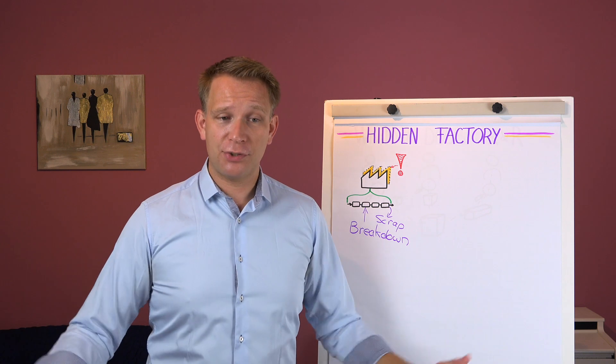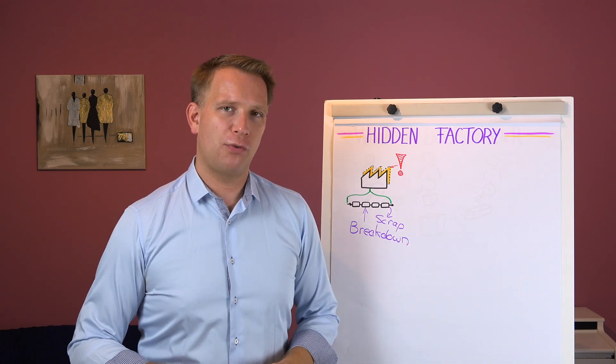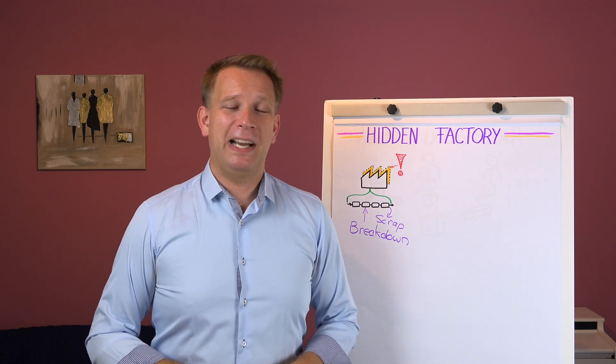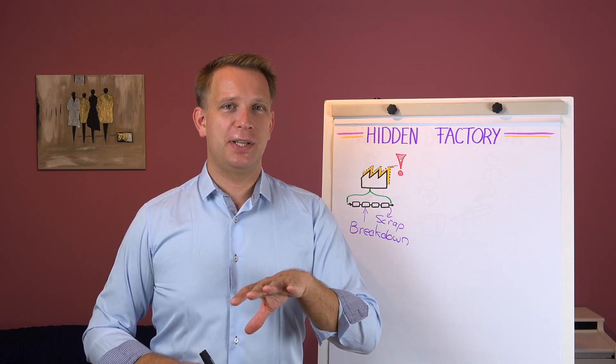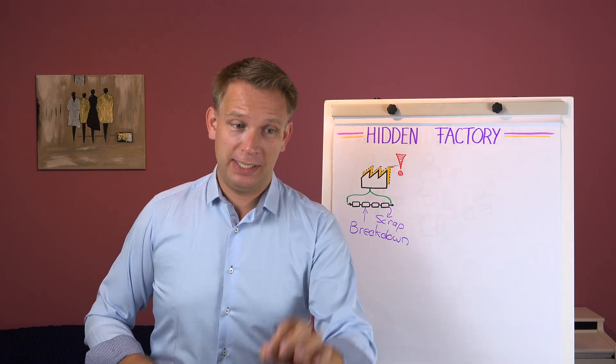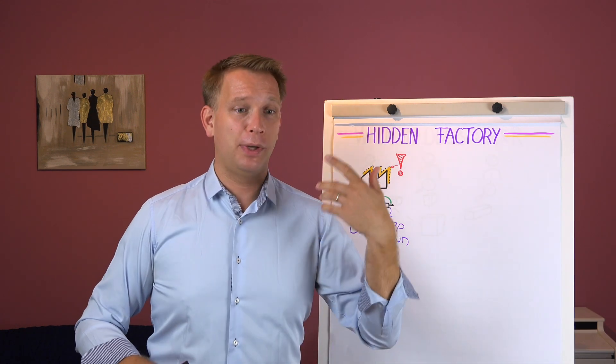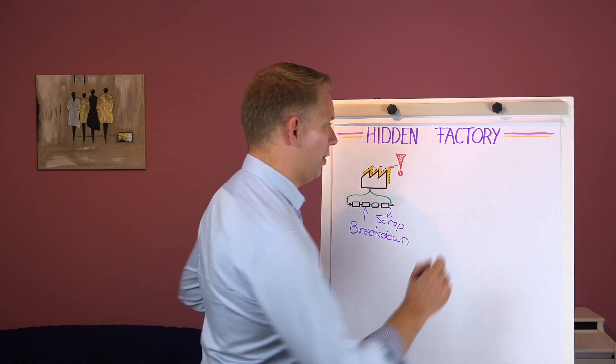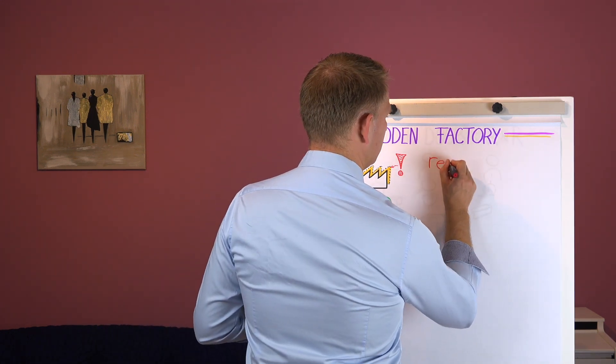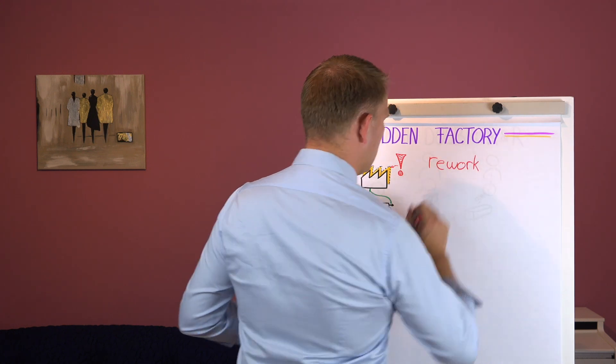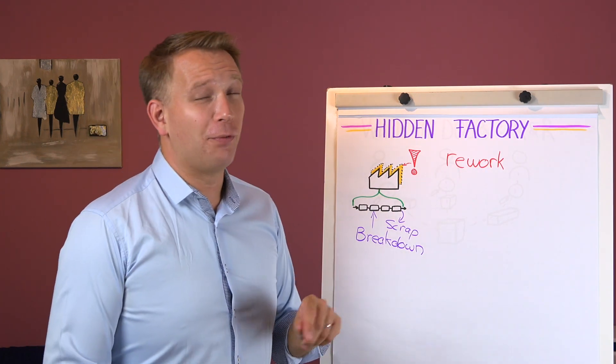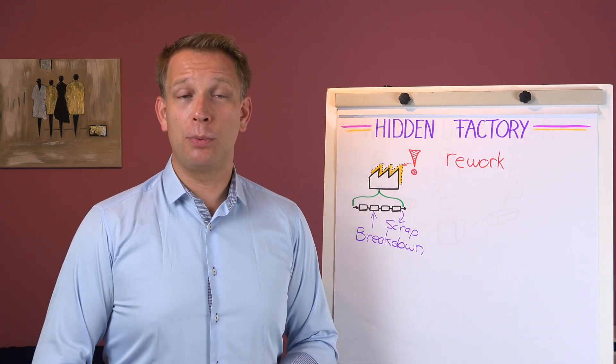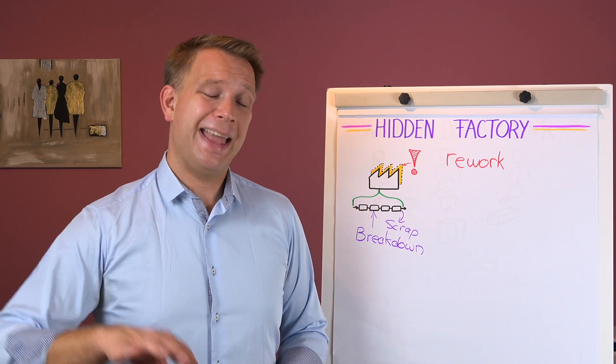You see the scrap, right? And breakdowns you notice when a line is not working for an hour or so. But will you also notice when an operator does a little bit of rework at their station? So something went wrong. They pick a product from the line manually, just a couple things, maybe insert it before the machine, get it through, or they just fix it there.